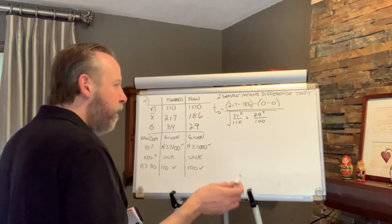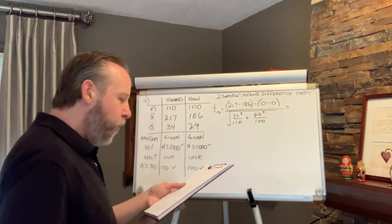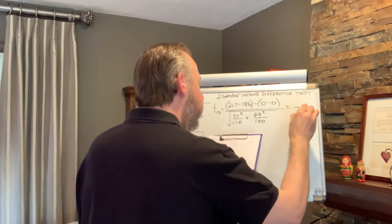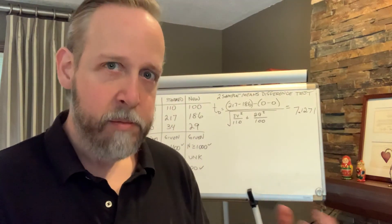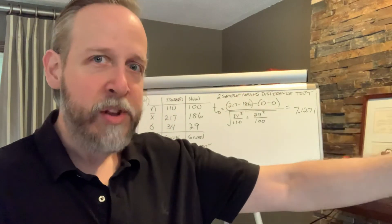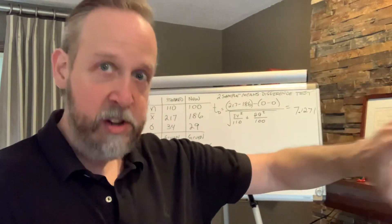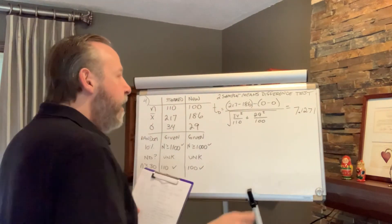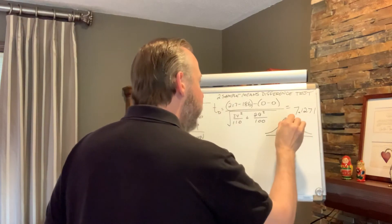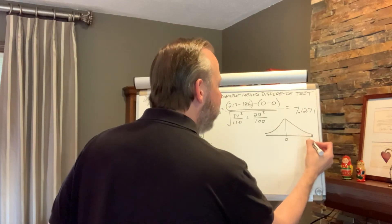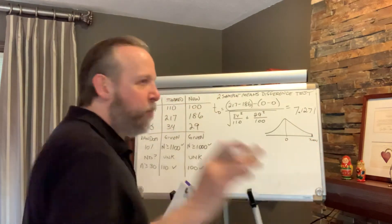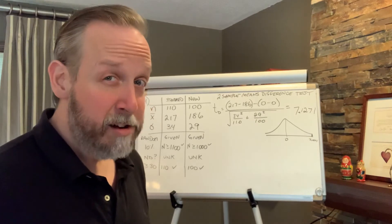The t-score for my particular sample difference is 7.1271. That's a huge t-score — t-scores and z-scores are similar, and a z-score that far from center would be considered extremely significant. If I sketch it: here's my zero, and 7.1271 is way out to the right. It's so far out that the shading under it is almost invisible.